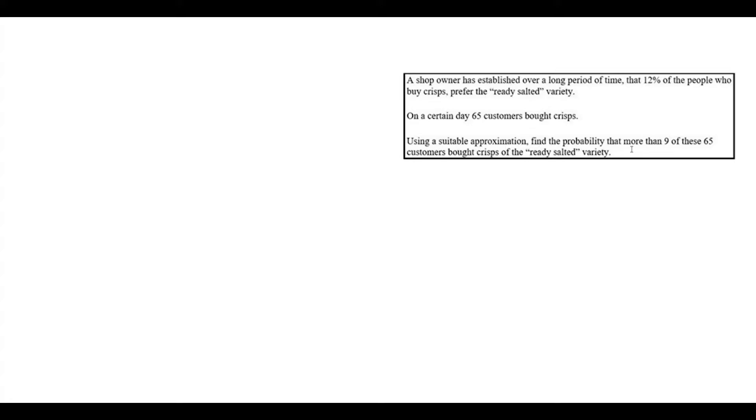We're then told to use a suitable approximation, definitely starting with a binomial distribution. We're asked to find the probability that more than 9 of these 65 customers bought crisps of the ready sorted variety.